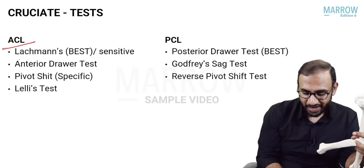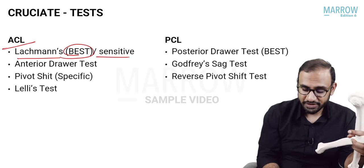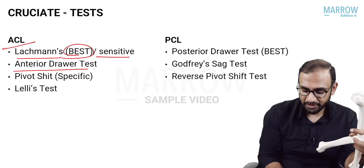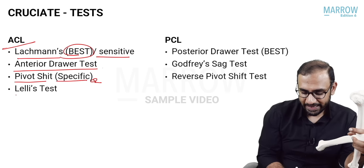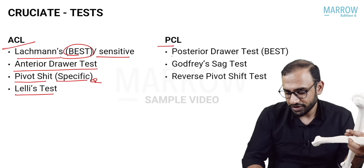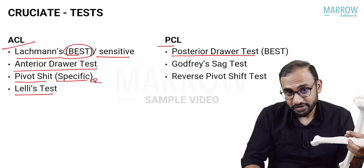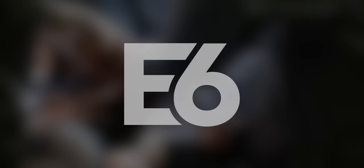To summarize: for ACL, the Lachman test is the most sensitive, the anterior drawer test is standard, the pivot shift test is the most specific, and Lally's test also exists. For PCL, you have the posterior drawer test and Godfrey's sag test.